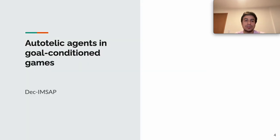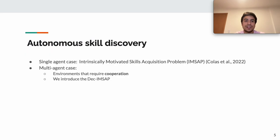Let's begin with the formalization of the problem. We address the autonomous skill discovery problem. This problem can take two forms, the single agent and the multi-agent case. For the single agent setting, this problem has been formalized as the intrinsically motivated skill acquisition problem. To extend it to multi-agent environments, we need to consider settings that require cooperation between agents. And then we formalize it as the decentralized intrinsically motivated skill acquisition problem, the Dec-IMSAP.